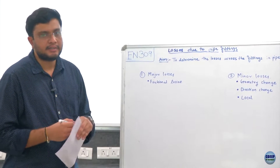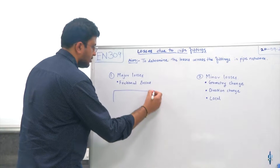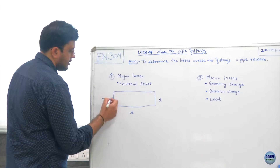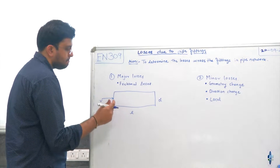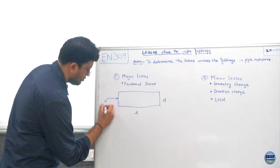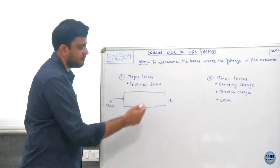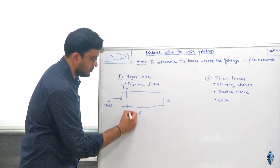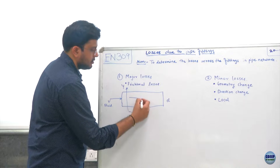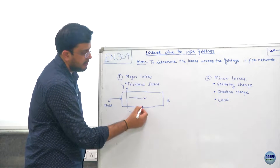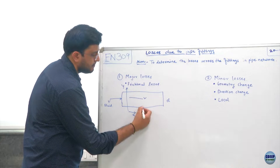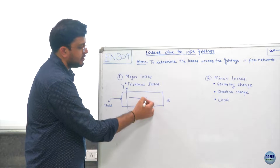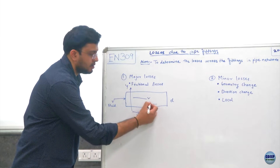To understand this, consider a pipe with length L, diameter D, and average flow velocity V. When fluid passes through this pipe section, the velocity variation takes place along the y-axis. At the central location the velocity is higher, while at the pipe wall the velocity is zero — this is also called the no-slip condition. The reason for this variation is that in the wall region viscous forces are dominant.